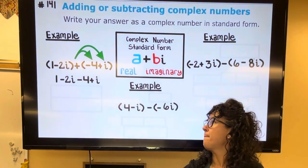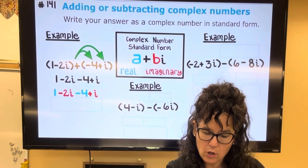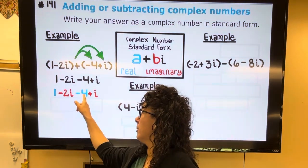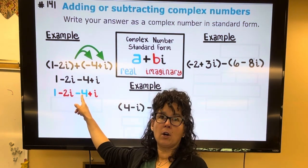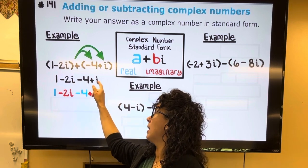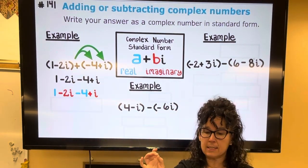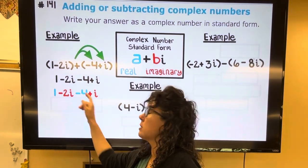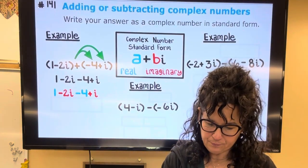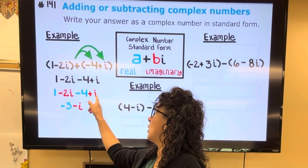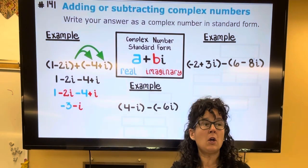I'm going to just color code that for you. We've got our numbers, the 1 and negative 4 are our numbers. And then the -2i and the i, those are our complex pieces. We want to put like things together. So 1 minus 4 is negative 3, and -2i plus 1i is negative i.